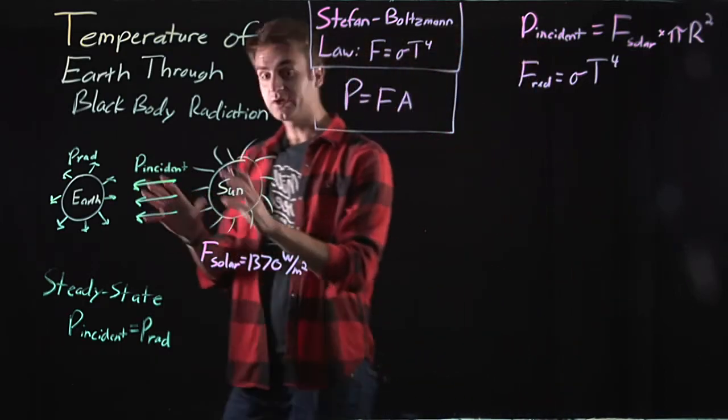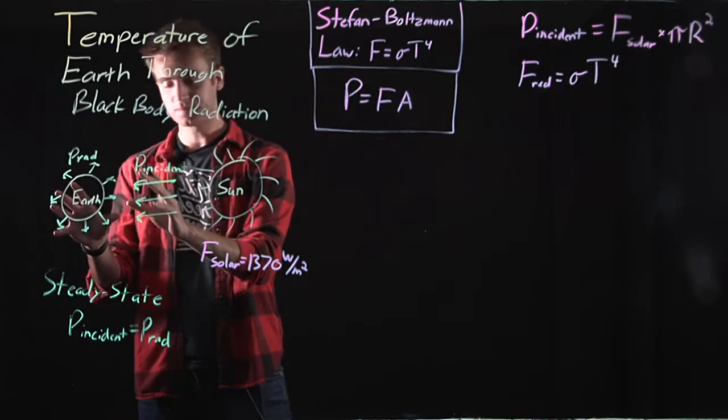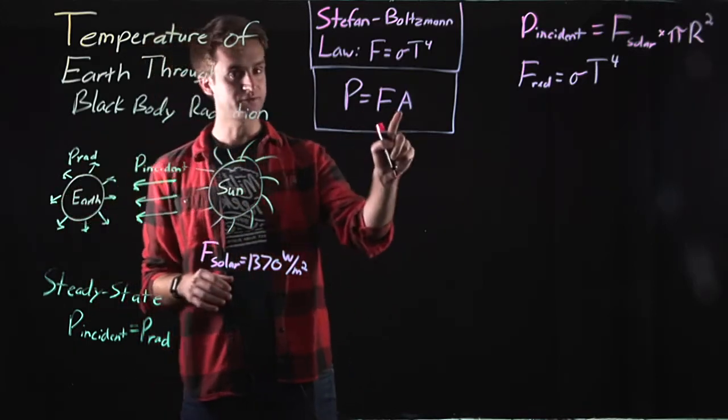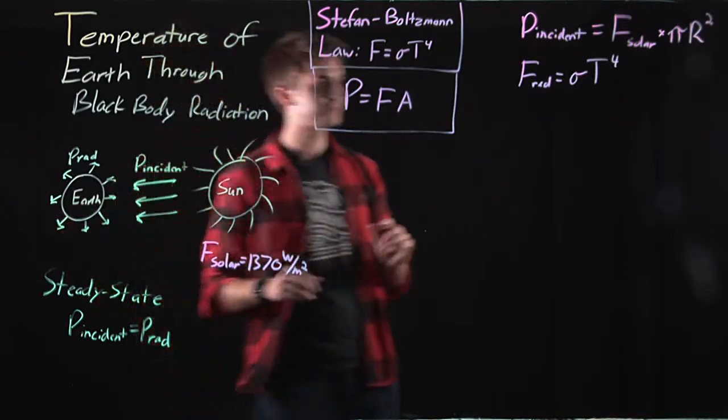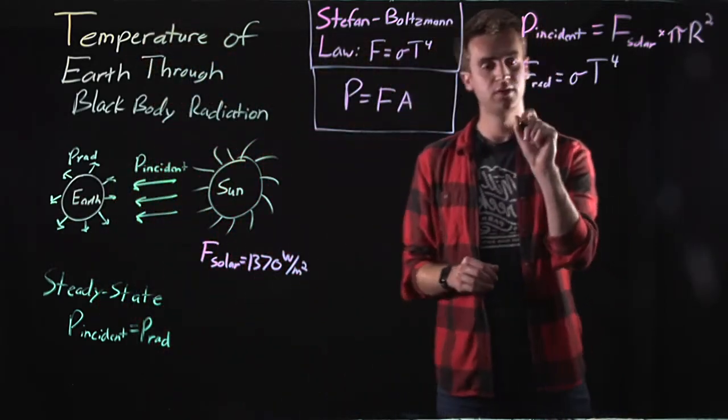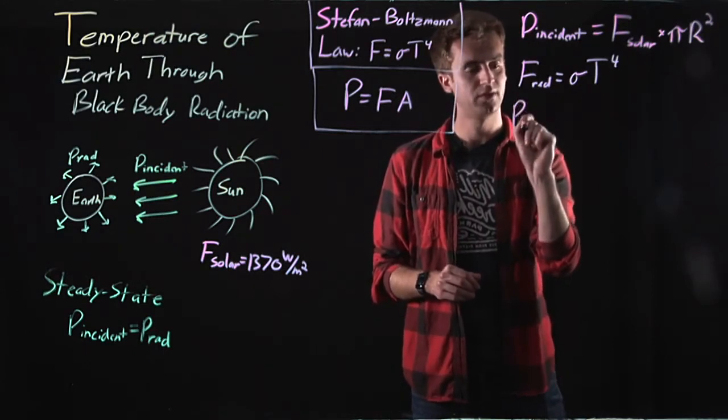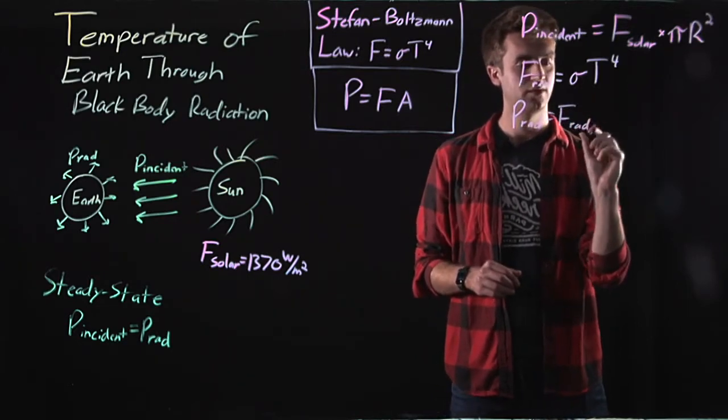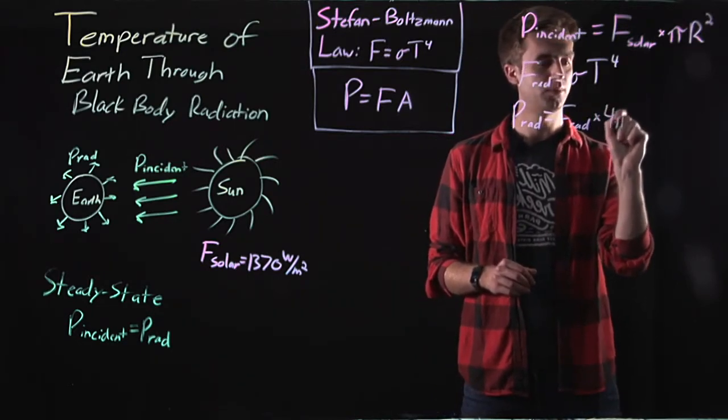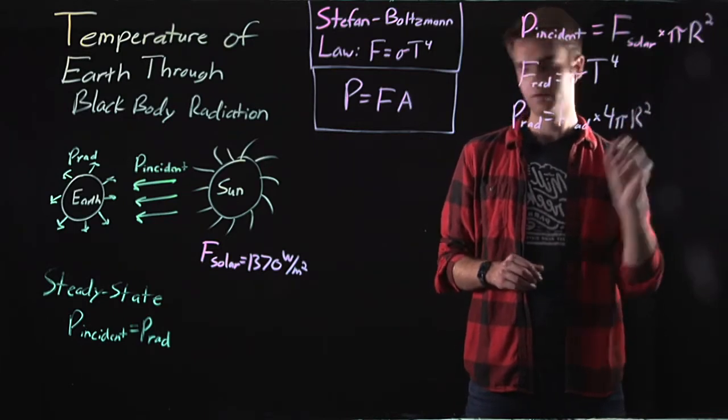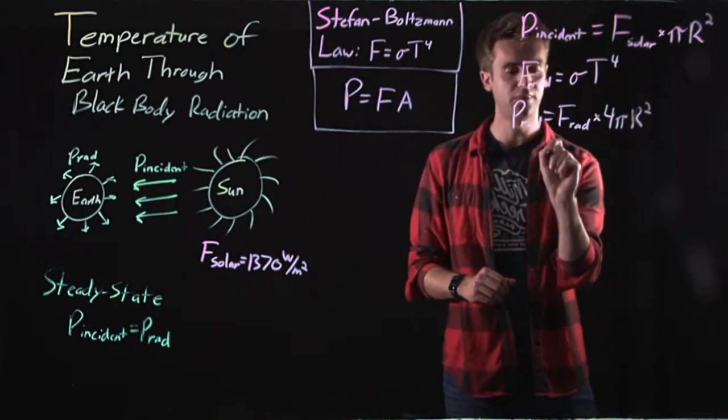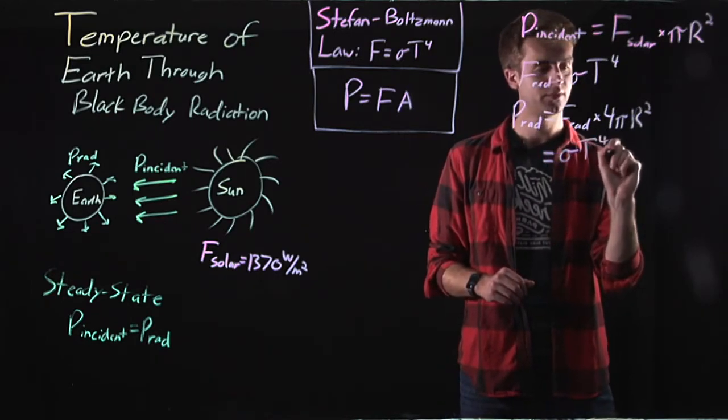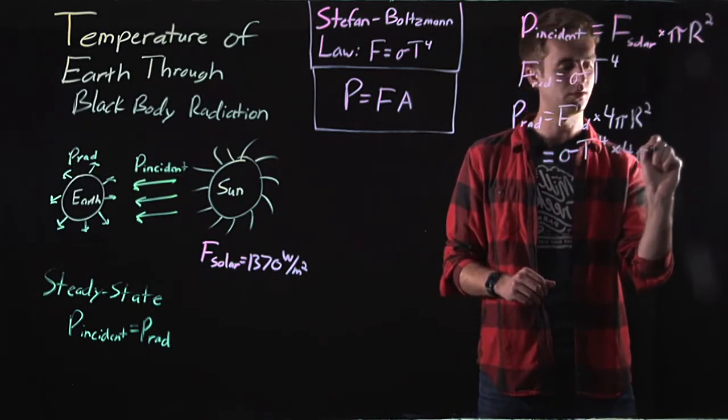Well, because the Earth is a black-body radiator, it must be radiating across its entire surface area. And so this area term must be the surface area of the Earth. So let's come back over here, and we can say that P rad equals F rad times 4 pi r squared, which is the surface area of the sphere. And that must be equal to sigma T fourth times 4 pi r squared.